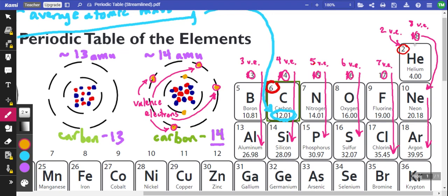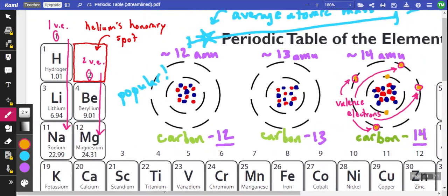Helium only has two valence electrons because it doesn't have enough electrons total to get to eight. We're stuck at two. If it makes you feel more comfortable, helium actually kind of belongs over here. So this is kind of helium's honorary spot.